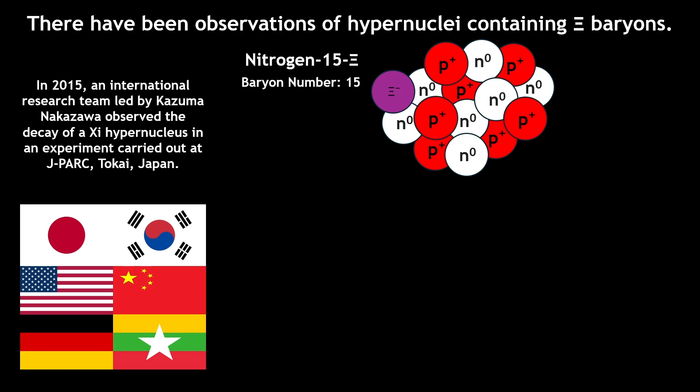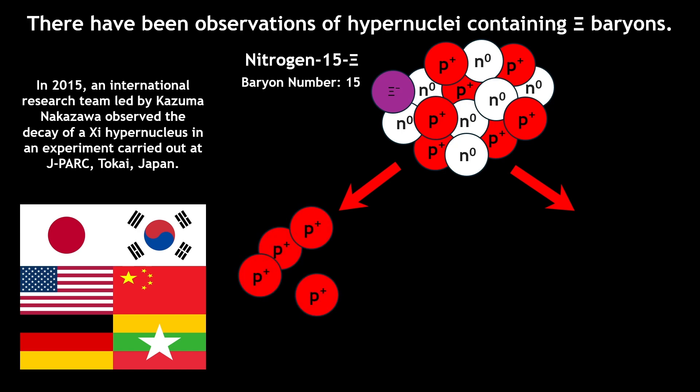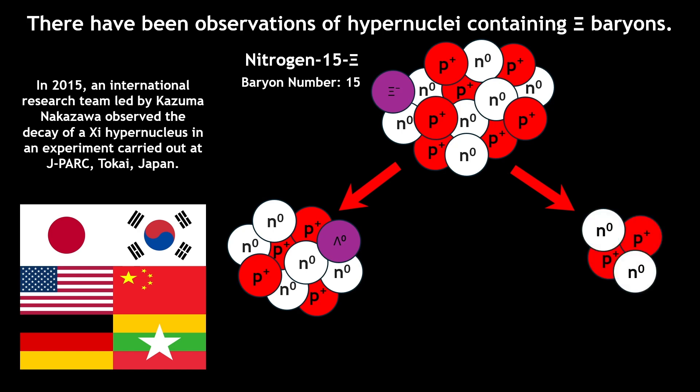Then, this hypernucleus decays into two resulting hypernuclei, beryllium-10 lambda, which is composed of four protons, five neutrons, and one lambda baryon, and helium-5 lambda, which contains two protons, two neutrons, and one lambda baryon.